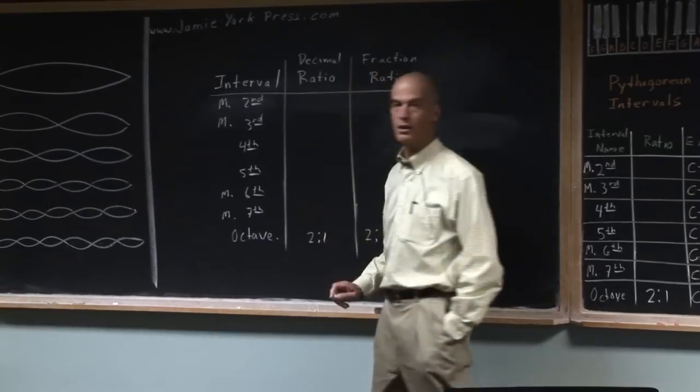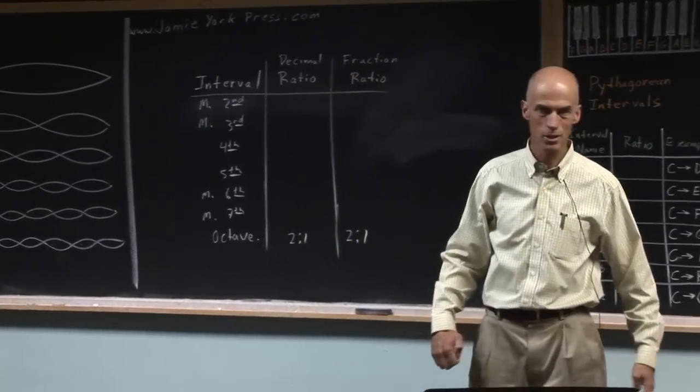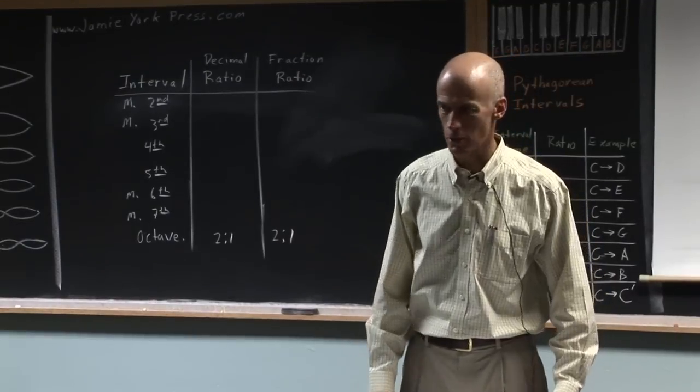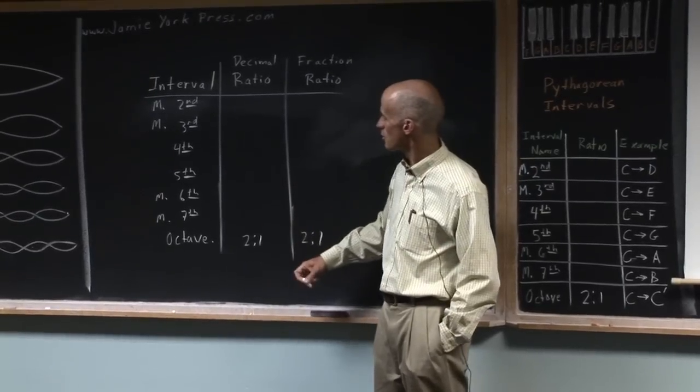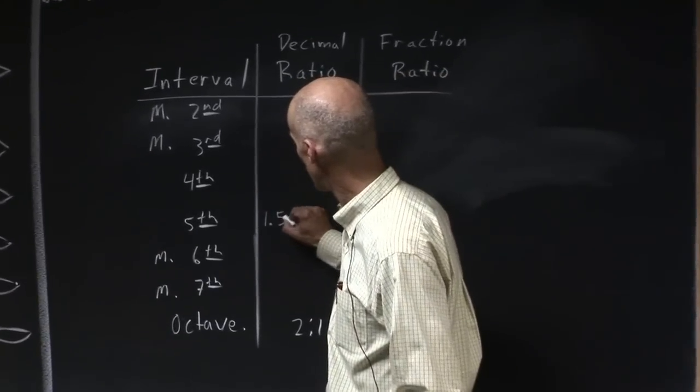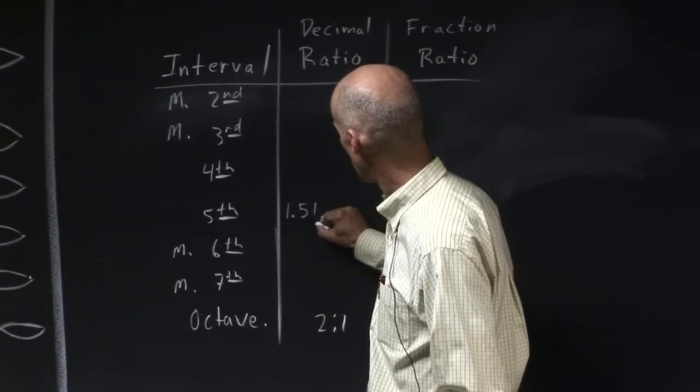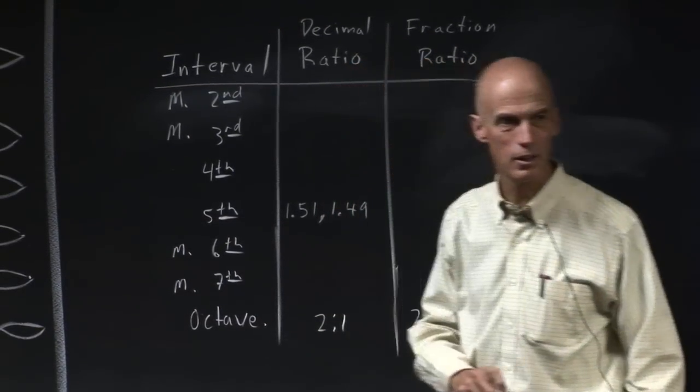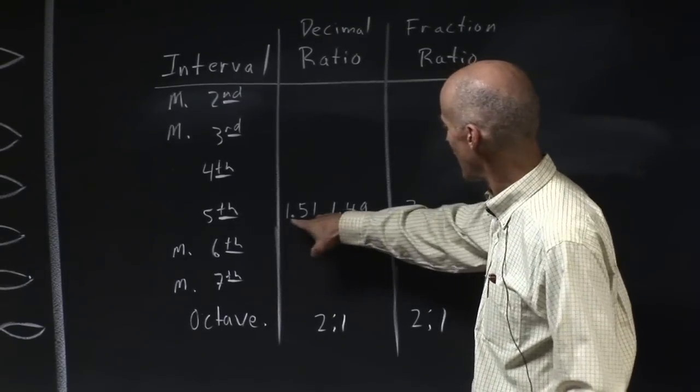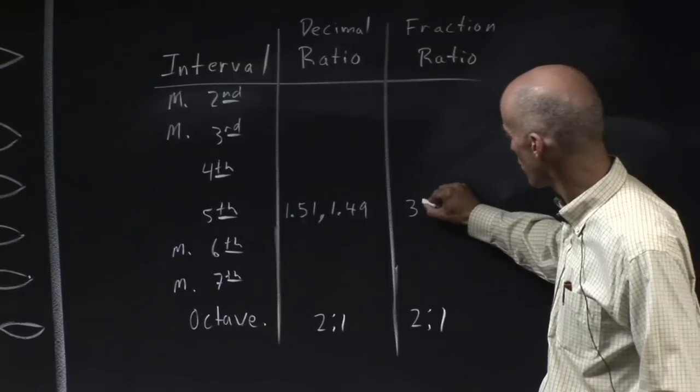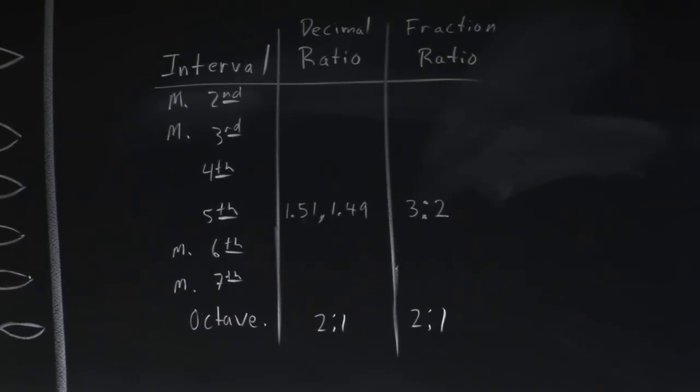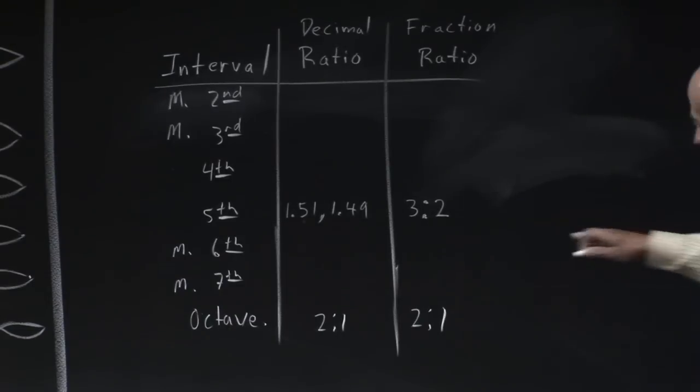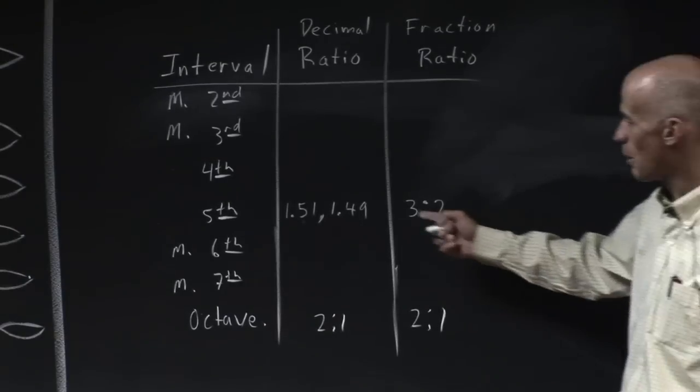We already spoke about the octave. And I'm going to write it down here both as fractions and decimals. And I know two of the groups were working with decimals and one group was working with fractions, which is quite interesting. So in terms of fifths, I think I saw 1.51. I think I saw 1.49. Is that about right? And so you can actually see that that number, 1.51, is approximately 3 divided by 2. And certainly, the whole idea of decimals are a fairly recent invention. And certainly in Pythagoras' time, it was represented as a ratio of 3 to 2. 3 divided by 2 is about 1.5.